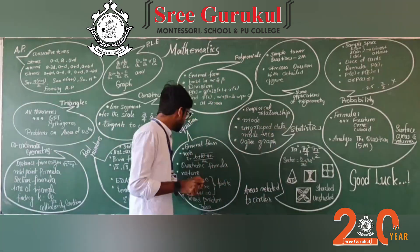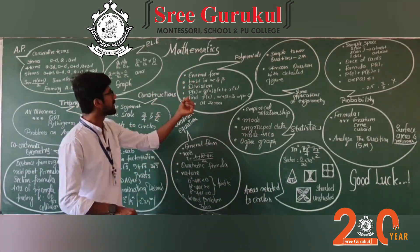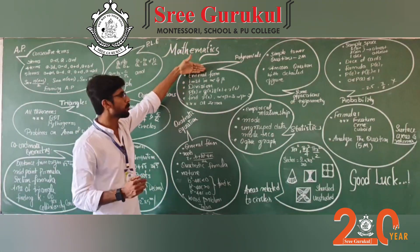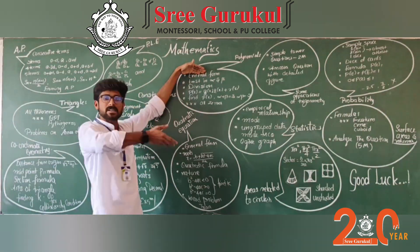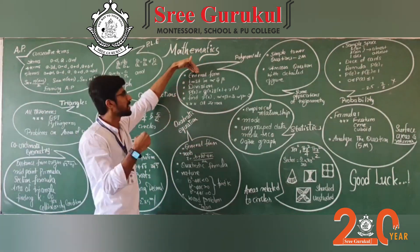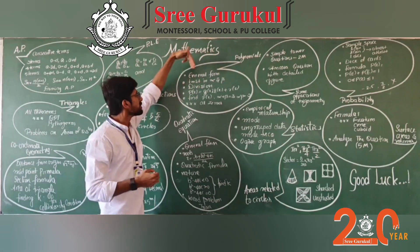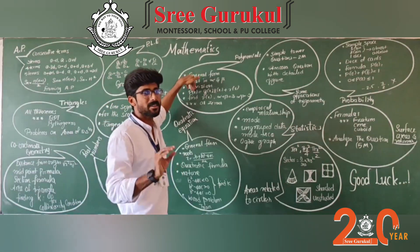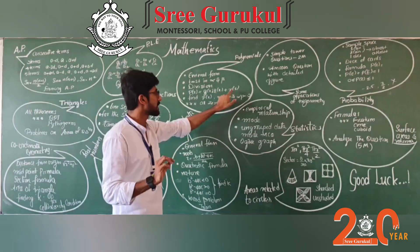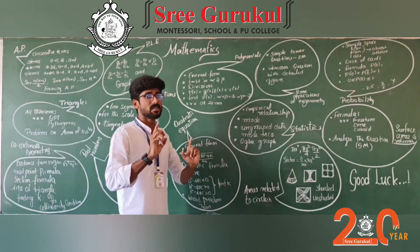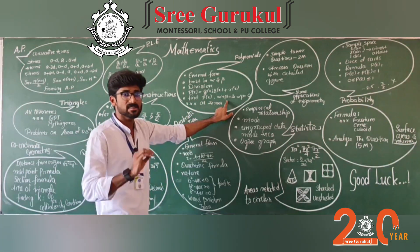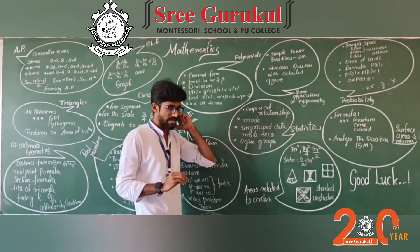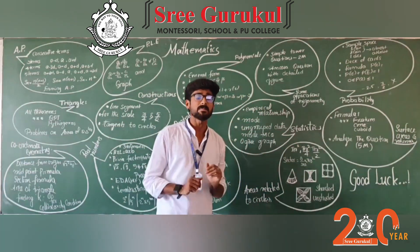Moving on to Polynomials — the general form and expected twists in alpha and beta, the zeros of the polynomial. Know how many zeros there are for a quadratic or cubic based on the graph or the degrees. Division — finding the remainder and quotient — is one question. Go through the division algorithm: P(x) = G(x)·Q(x) + R(x). Also, find P(x) when sum of zeros and product of zeros are given, including verification. Additionally, find all zeros where two zeros are given — that can be asked for 3 marks.